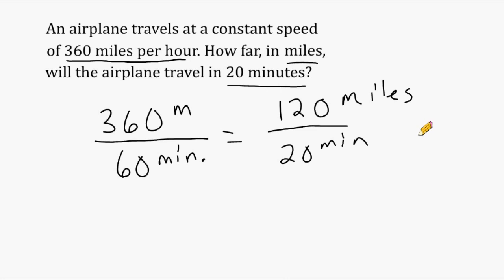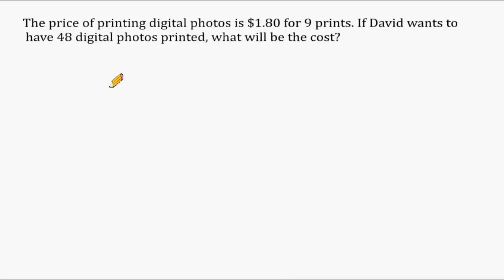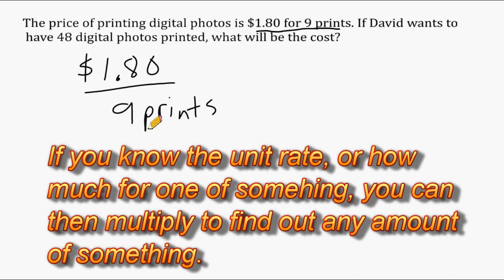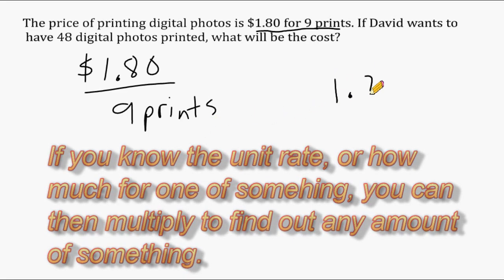Let's do another example. The price of printing digital photos is one dollar and 80 cents for nine prints. If David wants to have 48 digital photos printed, what will the cost be? The given rate is $1.80 for nine prints, and nine does not fit evenly into 48, so this problem is not straightforward. We need to convert the given rate into a unit rate by taking $1.80 and dividing it by nine.